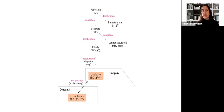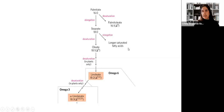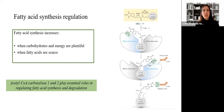Here is an overview: we start with palmitate. If we want a fatty acid with more carbons, such as stearate, we go through an elongation reaction. From palmitate, if we want to synthesize an unsaturated 16-carbon fatty acid, a desaturation reaction is needed. From stearate, we can do further elongation to synthesize longer saturated fatty acids, or desaturation to introduce a double bond. For linoleate and linolenate — omega-6 and omega-3 — these must be obtained through the diet.